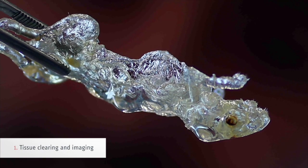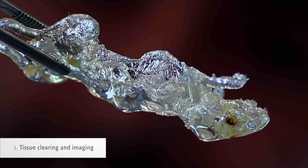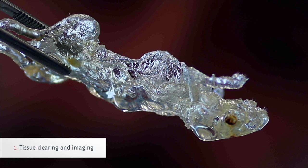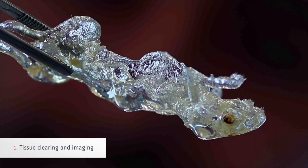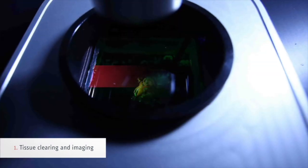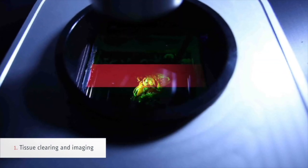One, whole mouse bodies are rendered transparent using a tissue-clearing method called VDISCO. The transparent mice are then imaged in 3D, allowing visualization of all metastases and even single, disseminated tumor cells.